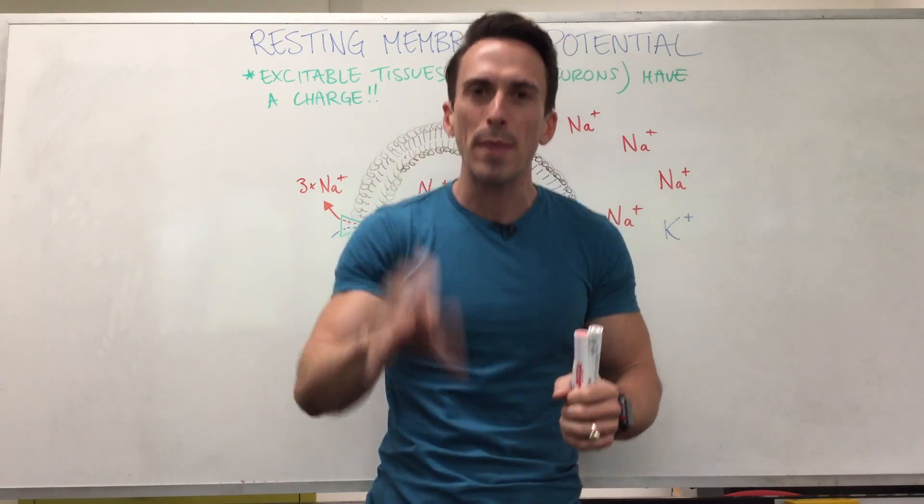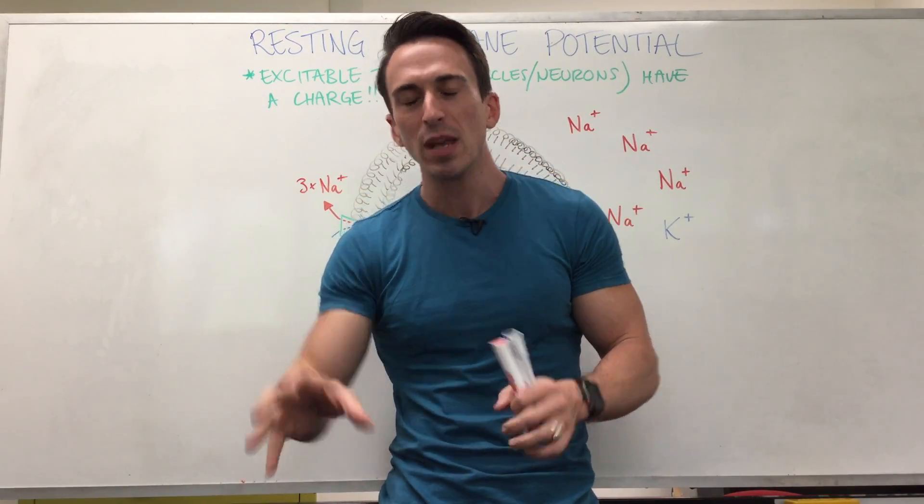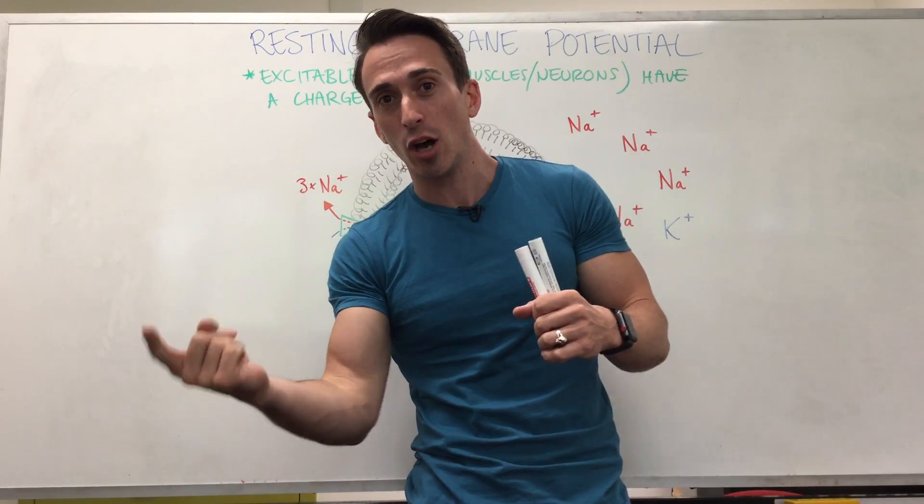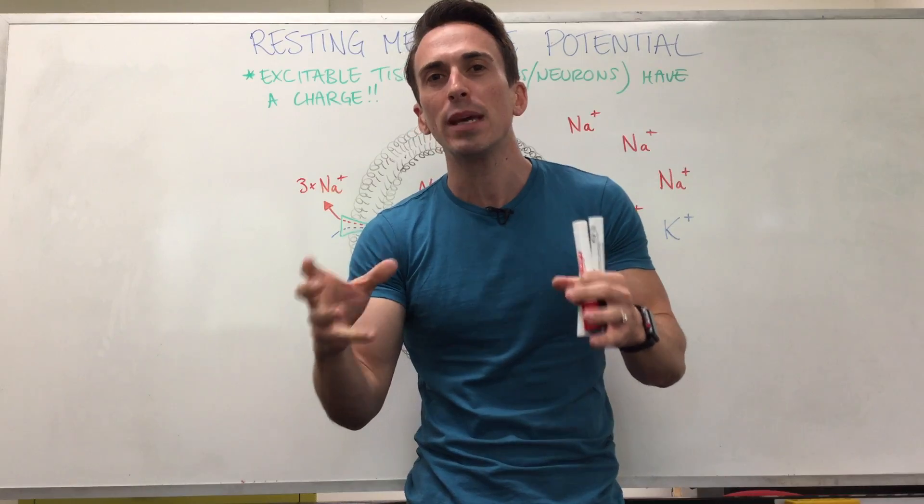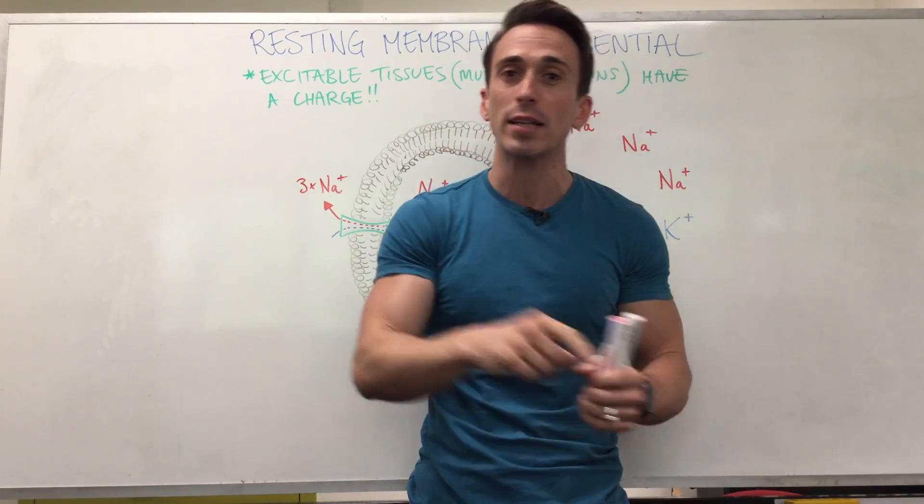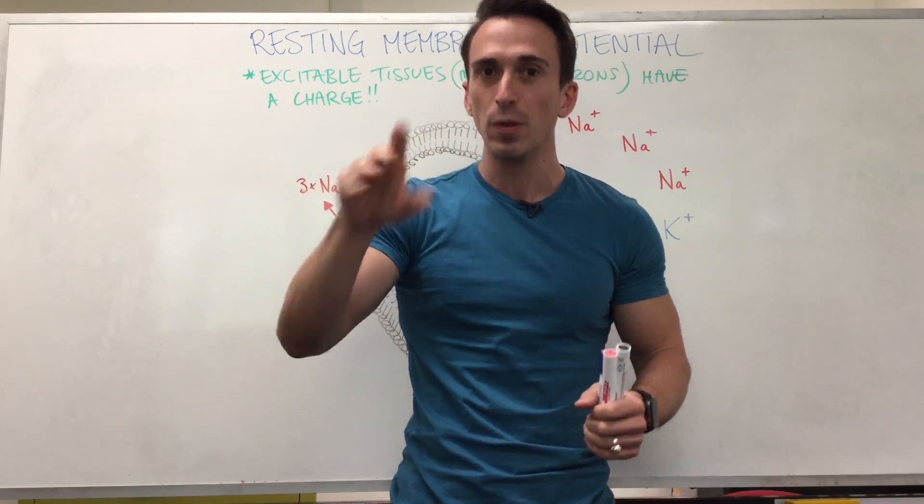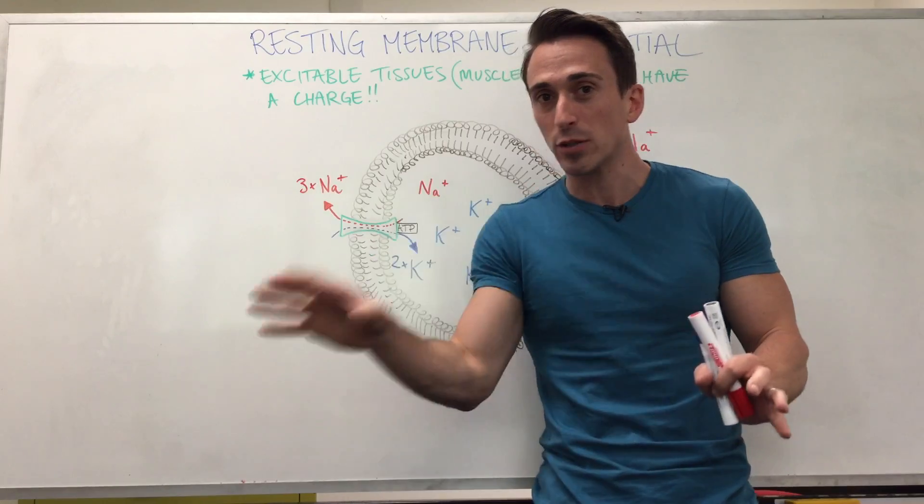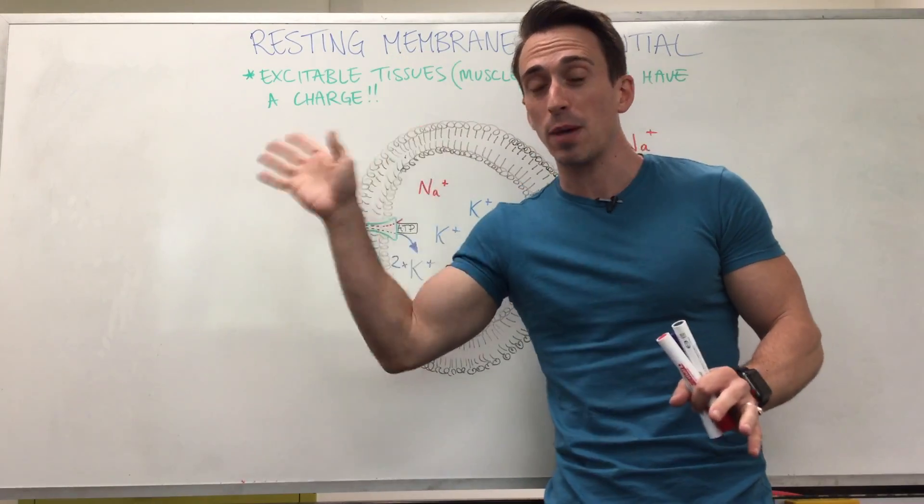Now the resting membrane potential is a charge difference that sits from the inside of the cell compared to the outside of the cell, and it's waiting to be excited so that it can do its activity. For muscles, that activity is to contract. For neurons, it's to send a signal. So think excitable tissues - they're going to be exactly the same between muscles and neurons, the concept of resting membrane potential.